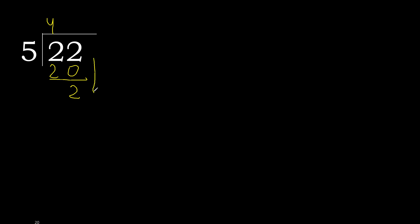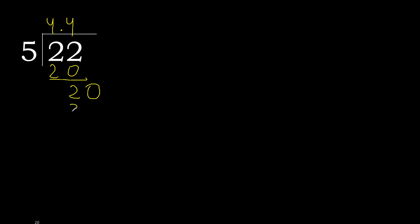Next, there is no number, therefore complete — always complete with 0. Here, with a decimal point: 0 point 20. 5 multiplied by 4 is 20, which is not greater. 20 minus 20 is 0.